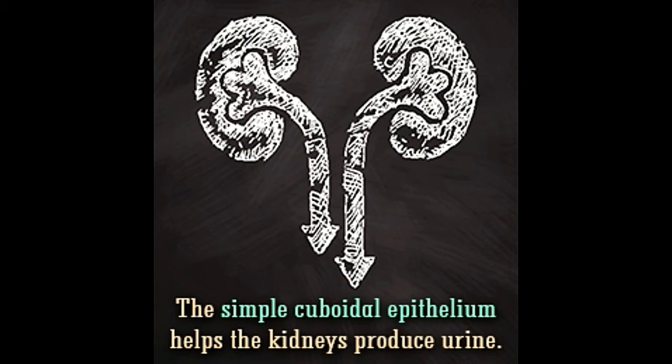At the same time, the body needs to control which substances are present inside it and which are being removed. All these roles are played by a kind of thin tissue called the epithelium. However, this epithelium may be made of a single layer of cells called simple epithelium, or several layers called stratified epithelium. In the following sections, we will learn about a type of simple epithelium called the simple cuboidal epithelium.